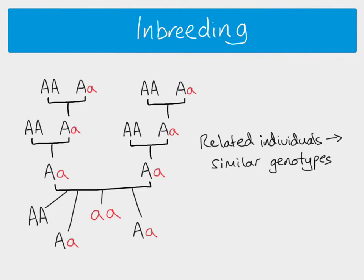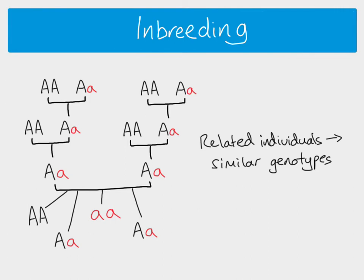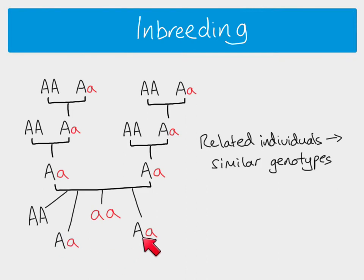If we think about two heterozygous parents, they could have an individual who's homozygous recessive, but they could also have an offspring who's homozygous dominant or heterozygous. In terms of probabilities: 25% big A big A, 25% little a little a, 50% heterozygous. So these individuals are very likely to have offspring with recessive alleles, and if you were to breed siblings in this family, it's very likely that you would end up with two recessive alleles being expressed.